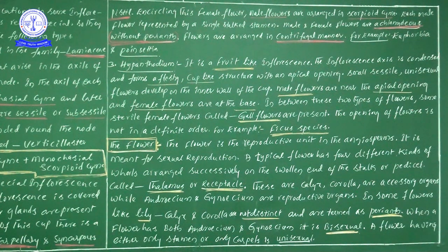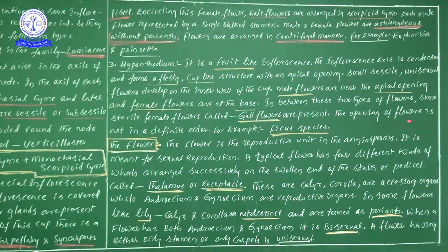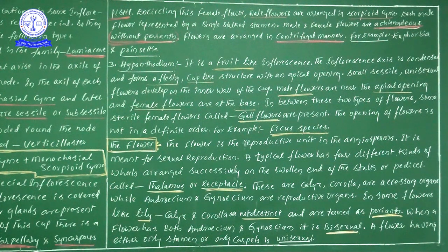Between the male flowers near the apical opening and the female flowers at the base, some sterile female flowers are present in the middle. These sterile female flowers are known as gall flowers. The opening of flowers is not in a definite order. This hypanthodium inflorescence is observed in Ficus species — the banyan tree.